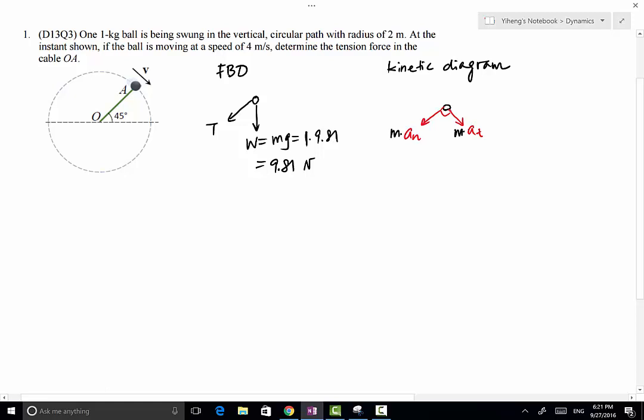Now we can evaluate An. Right now we do not know what At is. At is responsible for the change of the magnitude of the velocity, or in other words, change of the speed. An is only responsible for changing the direction of velocity. An can be evaluated from velocity raised to the second power divided by rho, rho being the central radius of curvature. In this case we do know that the speed is 4 meters per second, so squared, and the radius of the path is 2 meters. So this equals to simply 8 in the unit of meter per second squared.